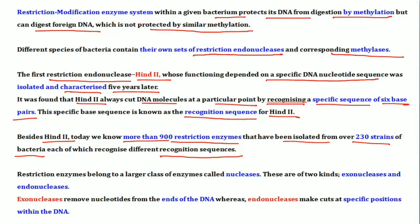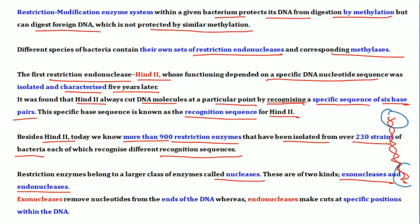Restriction enzymes belong to a larger class of nucleic acid digesting enzymes, which fall into two categories: exonucleases and endonucleases. If a particular DNA is cut at its terminal ends, the enzyme doing that cutting is an exonuclease — it removes nucleotides from the ends of DNA. In contrast, an endonuclease makes cuts at specific positions within the DNA.